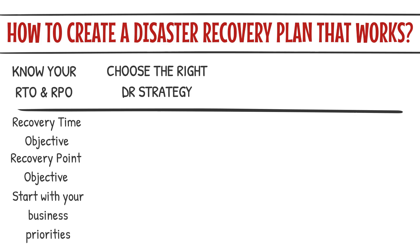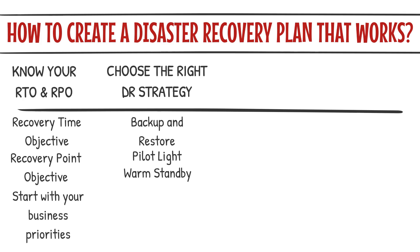Step two: choose the right cloud DR strategy. Once you know your RTO and RPO, it's time to choose a disaster recovery strategy. Backup and restore is the simplest and cheapest option — you back up your data to the cloud and restore it when disaster strikes, but the downside is it's slow, taking hours or even days. Pilot light means having a bare-bones environment running at all times, ready to scale up when needed — faster than backup and restore but still cost-effective. Warm standby gives you a scaled-down version of your production environment running 24/7, ready to scale up when disaster hits.